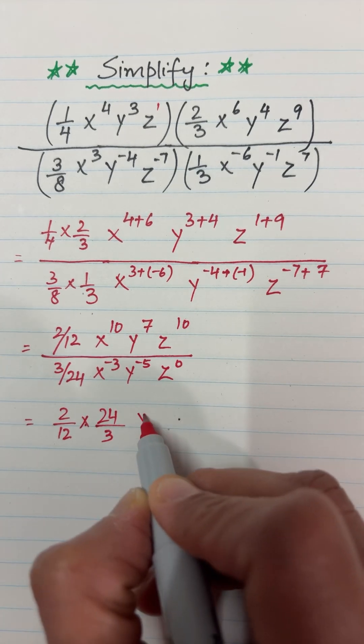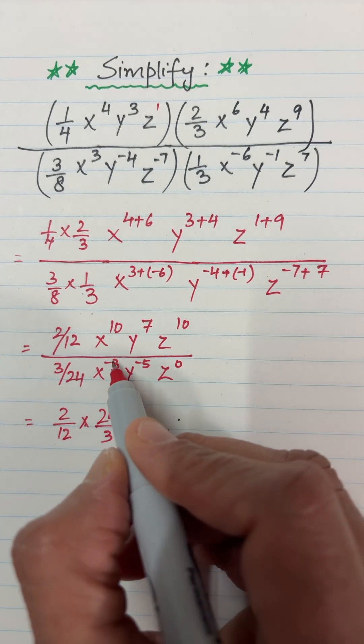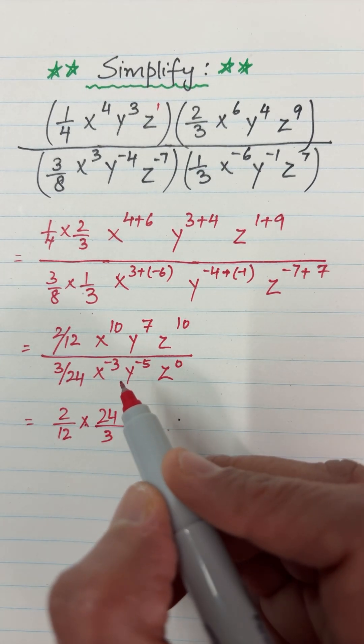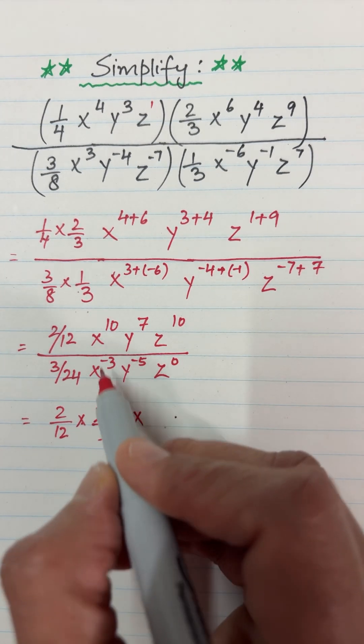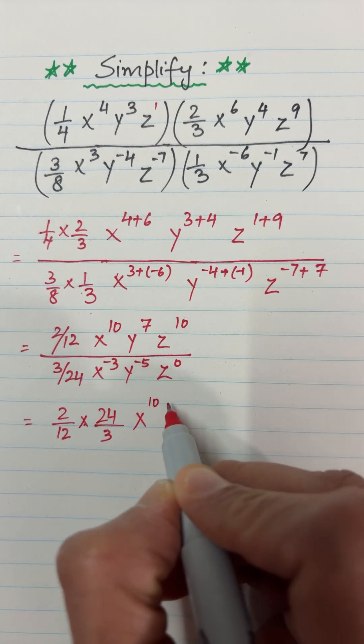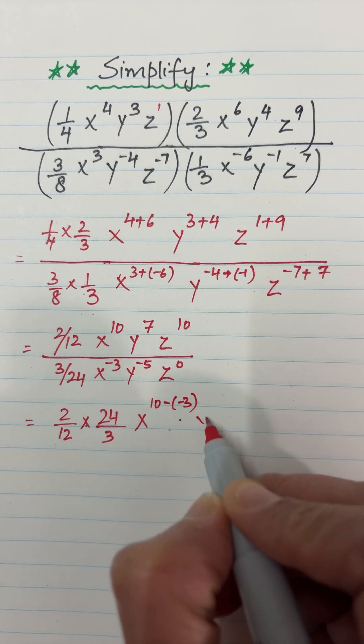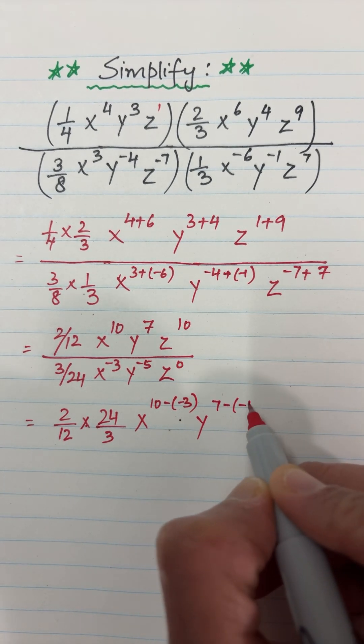Now x^10 divided by x^(-3). Let's use the law of exponents: when the bases are the same and they are being divided, the exponents get subtracted. So y^(7 - (-5)), z^(10 - 0).